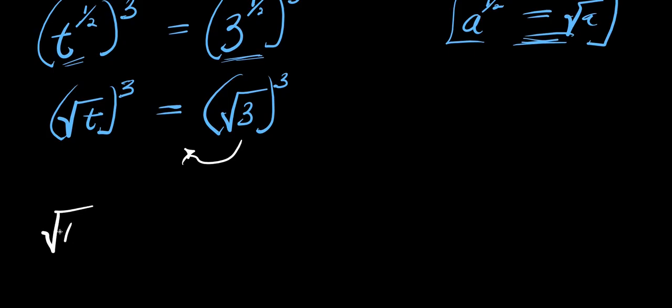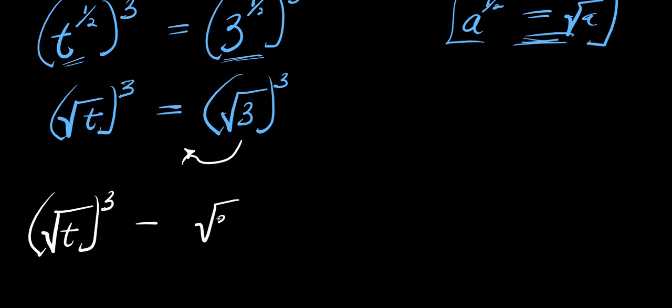Moving the right side over, we have the square root of t, raised to the power of three, minus the square root of three, raised to the power of three, and this equals zero.